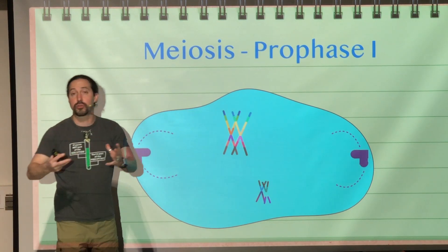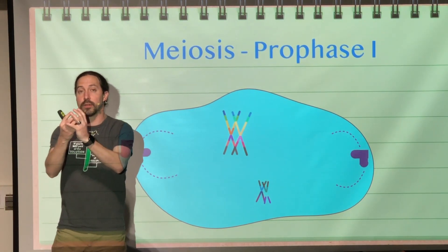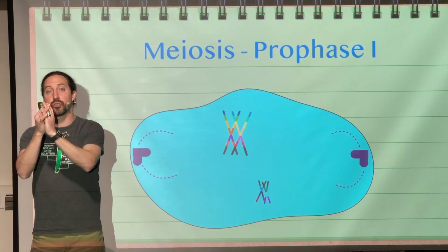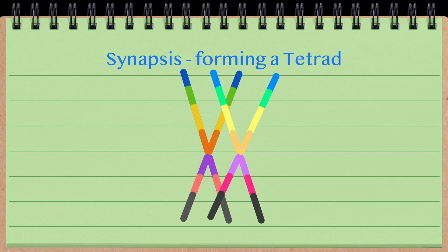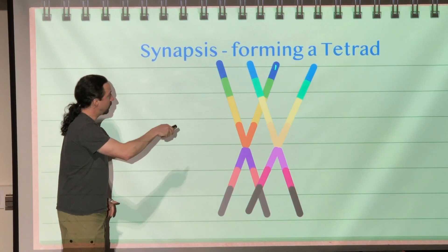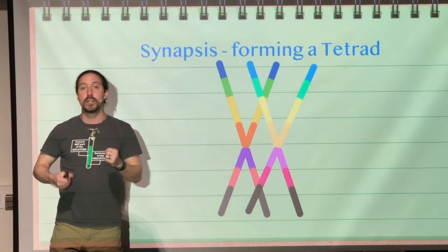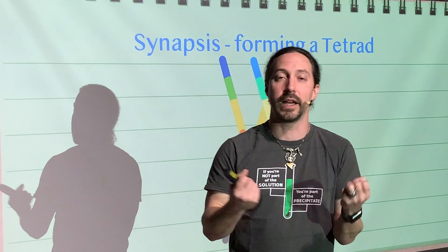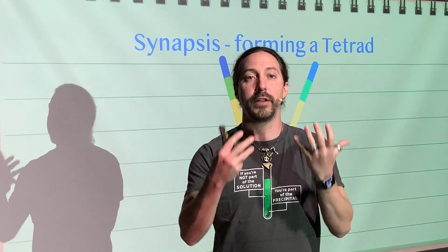Our homologous chromosomes have joined together, crossing some of their sister chromatids across each other. We call this a tetrad because it is made up of four sister chromatids — and 'tetra' means four. Because we have four different sister chromatids put together, we have this formation of a tetrad.